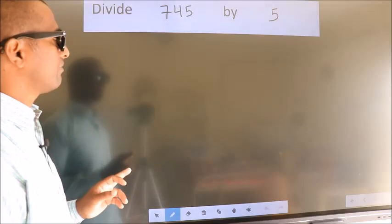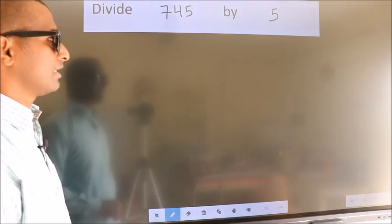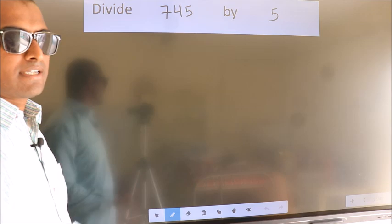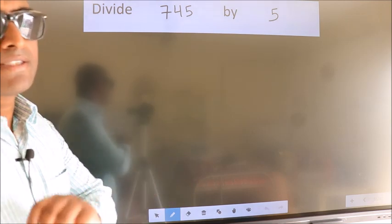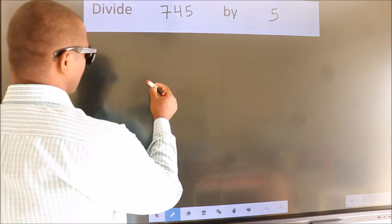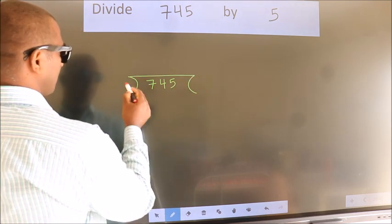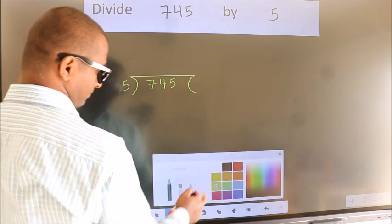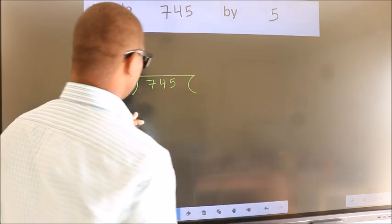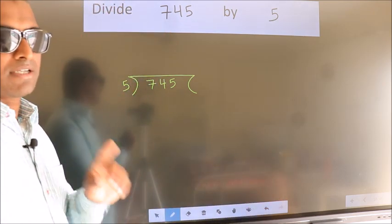Divide 745 by 5. To do this division, we should frame it in this way. 745 here, 5 here.